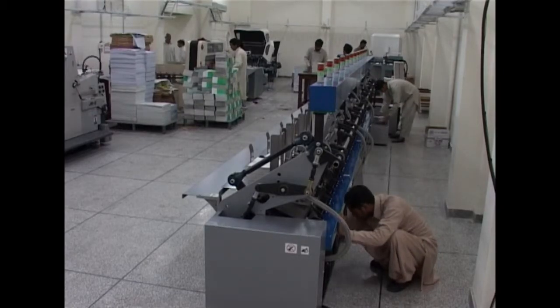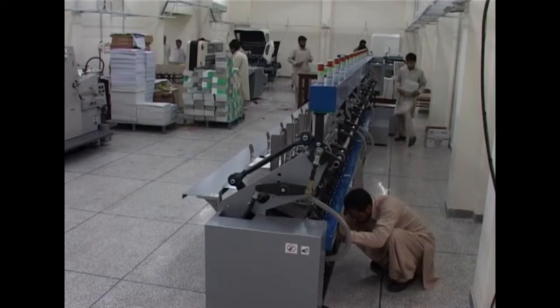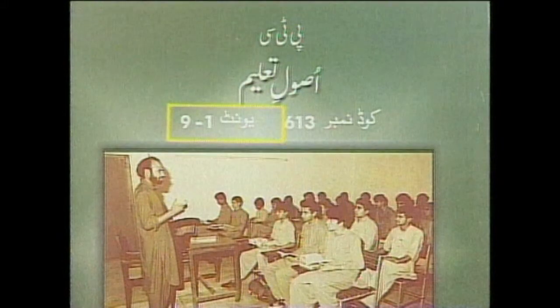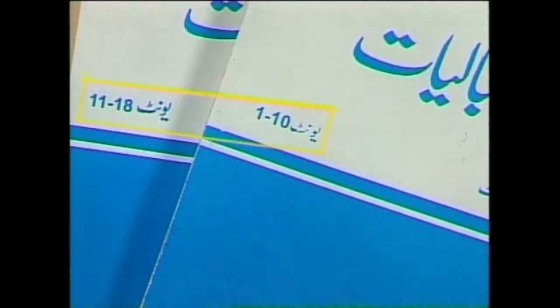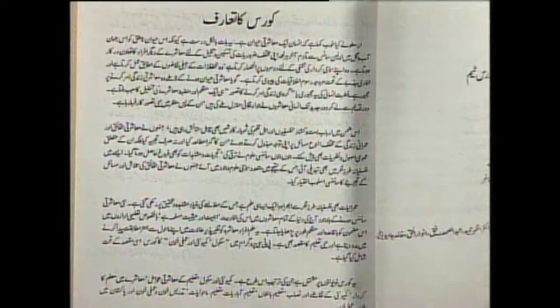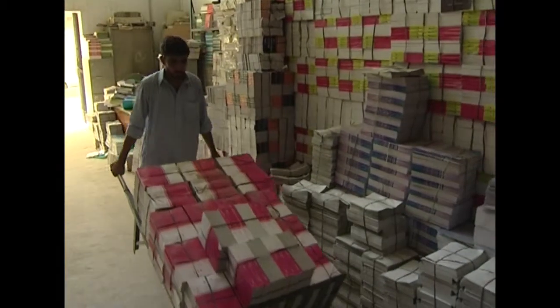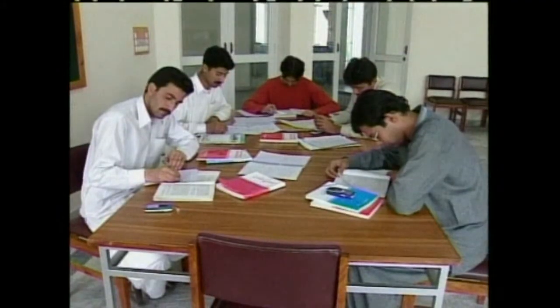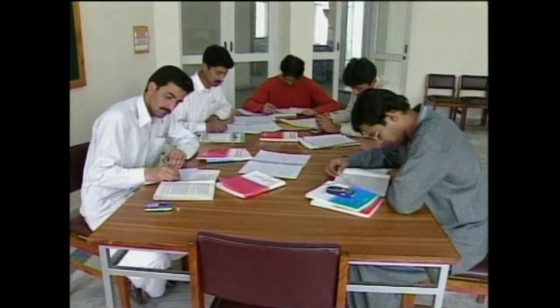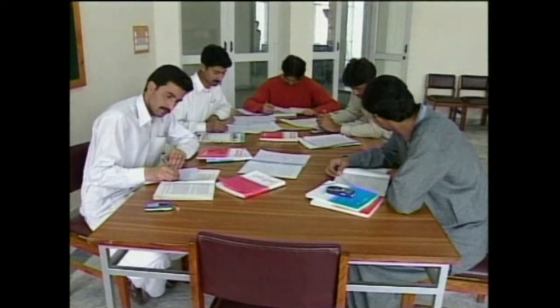یونیورسٹی کی کتابیں یونیورسٹی کے اپنے پریس میں چھپتی ہیں۔ ہاف کورس کے لیے نو یونیٹ اور فل کورس کے لیے اٹھارہ یونیٹ ہوتے ہیں۔ ہر یونیٹ تیس سے پینتیس صفحات پر مشتمل ہوتا ہے اور اس میں خود آزمائیاں اور ان کے جوابات بھی دیئے گئے ہوتے ہیں۔ یہ کتابیں اس طرح لکھی جاتی ہیں کہ طالب علم بغیر استاد کے پڑھ، سمجھ اور امتحان کی تیاری کر سکیں۔